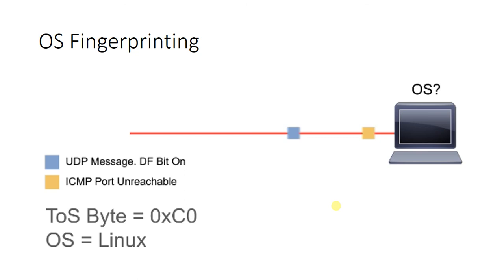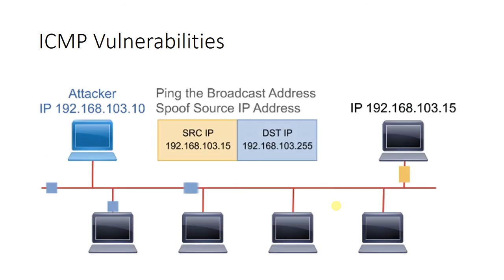Attackers can use ICMP in many ways — from ICMP tunneling to denial of service to distributed denial of service attacks such as the smurf attack, which creates a distributed DoS attack on an unsuspecting host. Knowing how ICMP attacks are formulated and how they are used can help a security analyst spot these anomalies when analyzing network traffic.